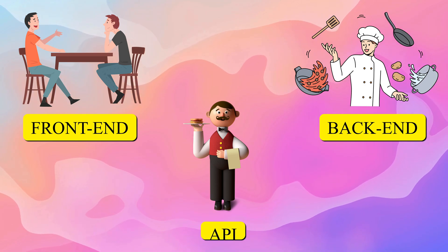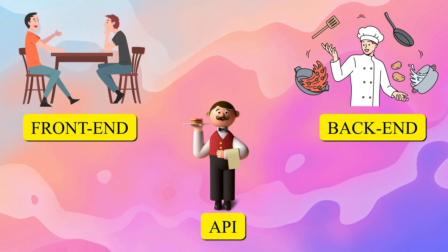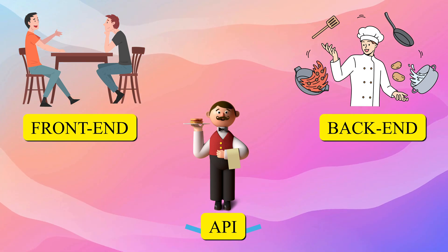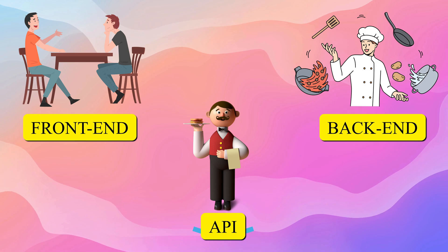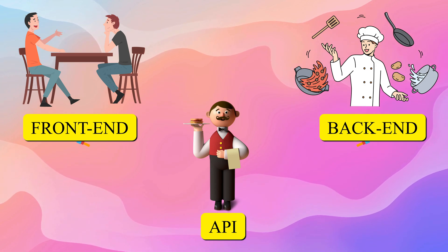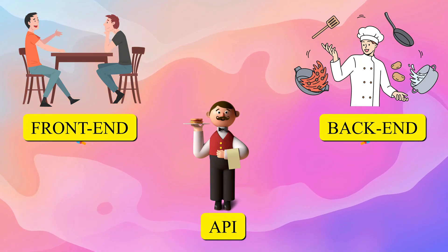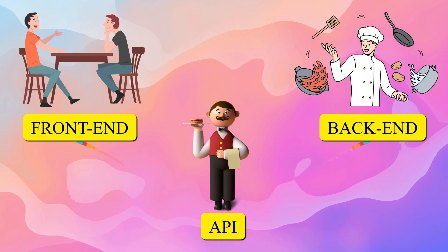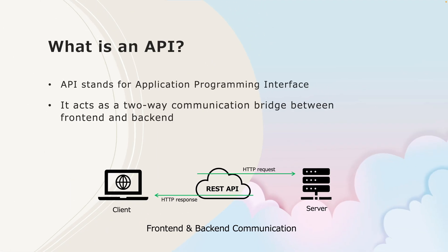The customer is none other than the front end who wants the data, the kitchen is the back end who prepares the data, and the waiter is the API who serves the data. So the API is acting as a bridge between the front end and the back end — the front end is the customer, the back end is the kitchen, and in between them is the API, which is the waiter. That's a simple real-life example of how APIs work.